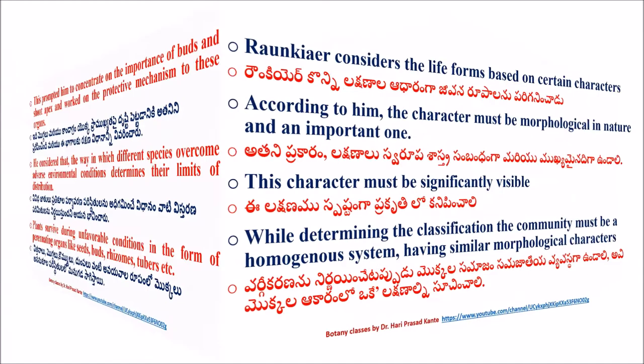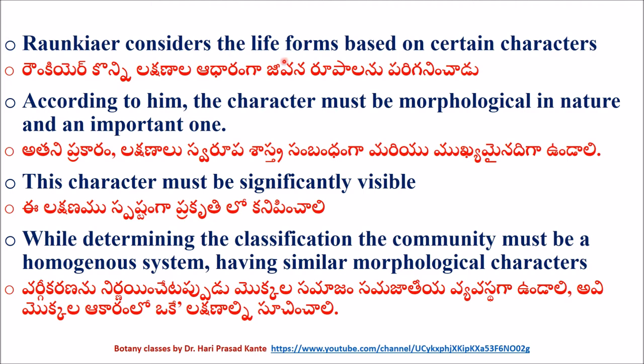Raunkiær considers the life forms based on certain characters. The character must be morphological in nature and an important one. This character must be significantly visible while determining the classification, and the community must be a homogenous system having similar morphological characters.